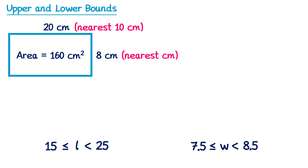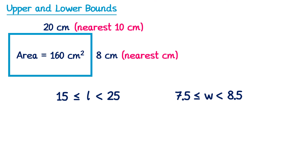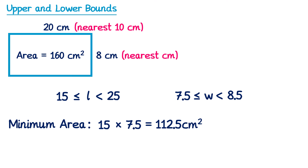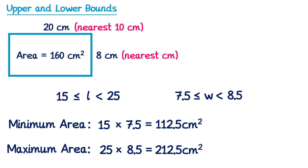Now we're going to take these two error intervals and use them to work out the maximum and minimum possible areas. The minimum area must be the minimum length multiplied by the minimum width. Multiplying those two together gives 112.5cm squared. For the maximum possible area, you take the maximum length — 25 — and multiply by the maximum width — 8.5 — and that gives you 212.5cm squared.